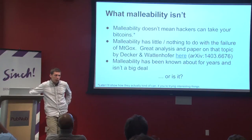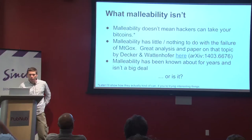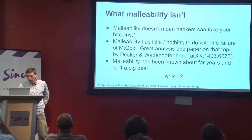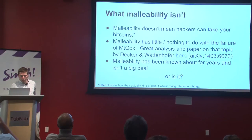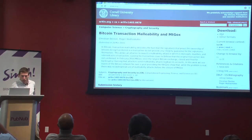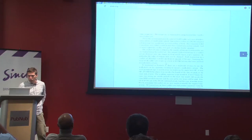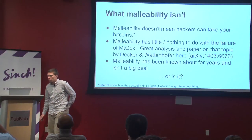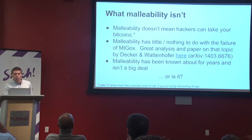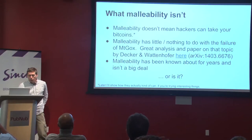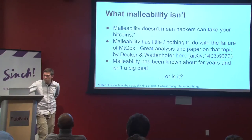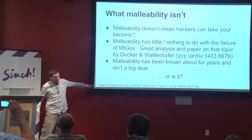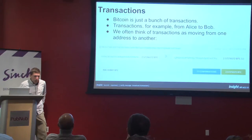What malleability isn't: what brought malleability to the forefront of many people's minds is a certain exchange that fell apart less than a year ago, and they blamed malleability publicly. However, this is really not the case. There's a great paper documenting Bitcoin transaction malleability and Mt. Gox, analyzing the entire blockchain, and it's clear that malleability had nothing to do with Mt. Gox's problems. Malleability has been known about for years and sort of isn't a big deal — or is it? It seems like people cannot steal your bitcoins based on malleability, but later I'll show you how they actually kind of can if you're doing interesting things.